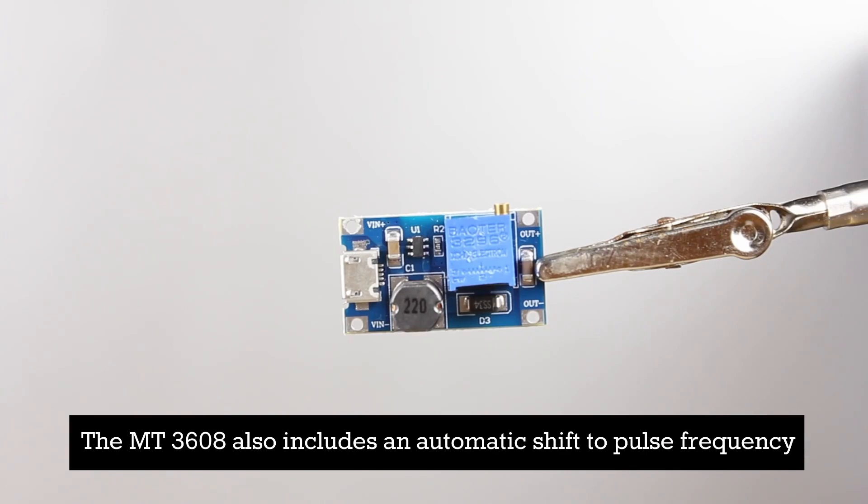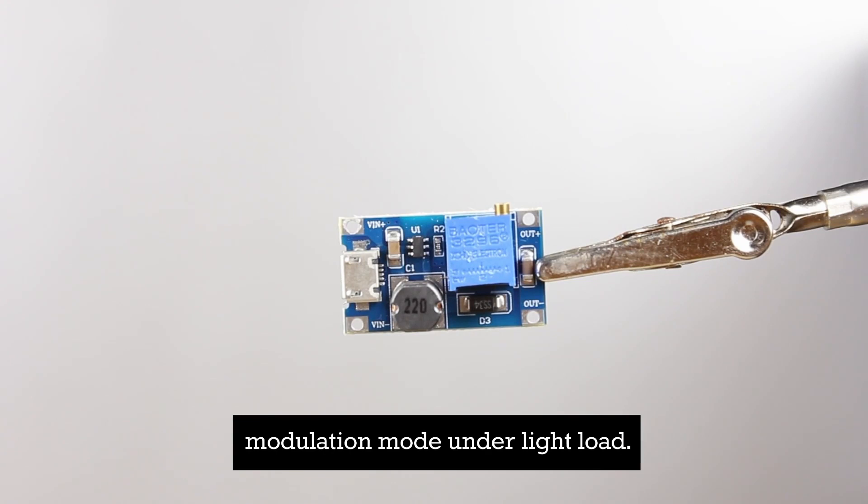The MT3608 also includes an automatic shift to pulse frequency modulation mode under light loads.